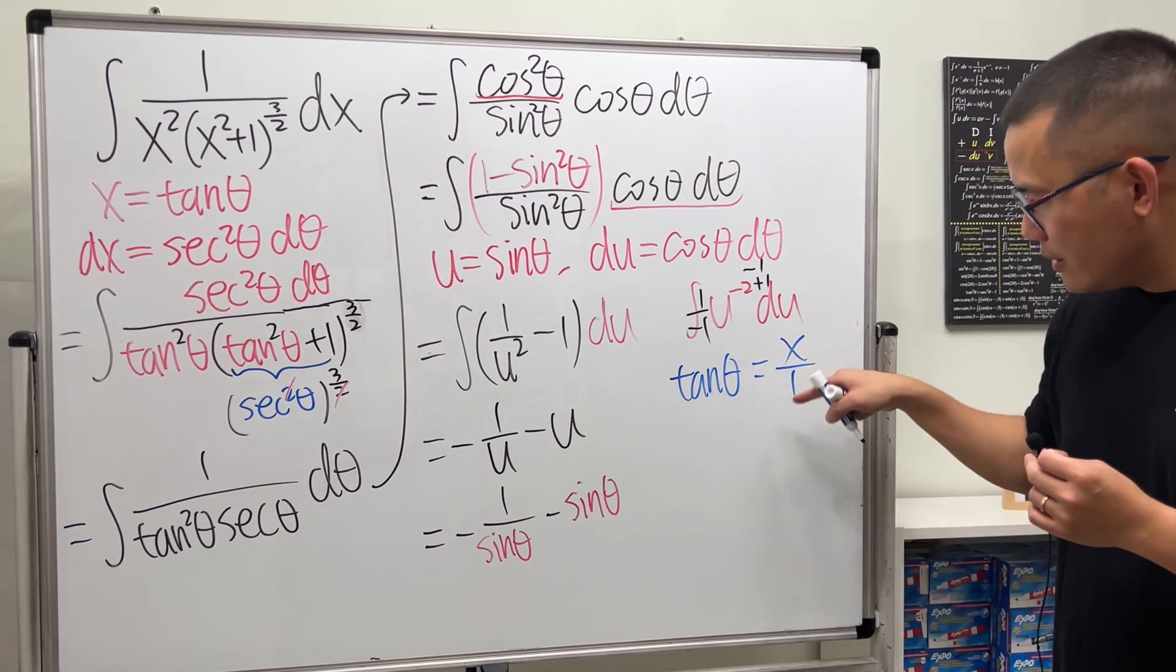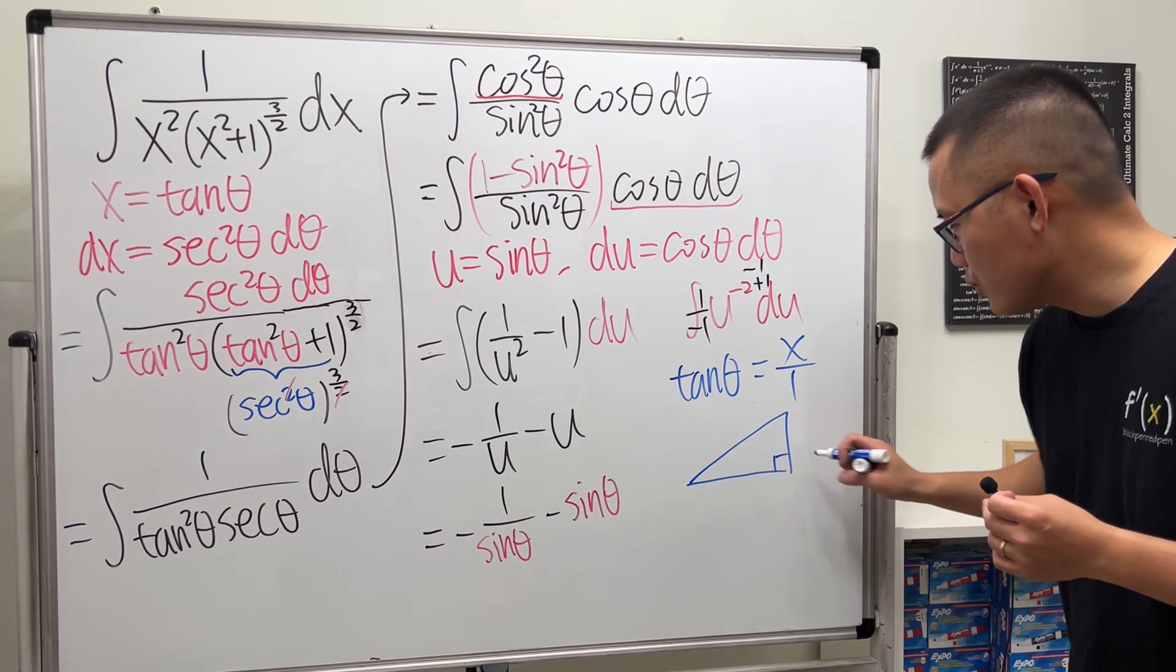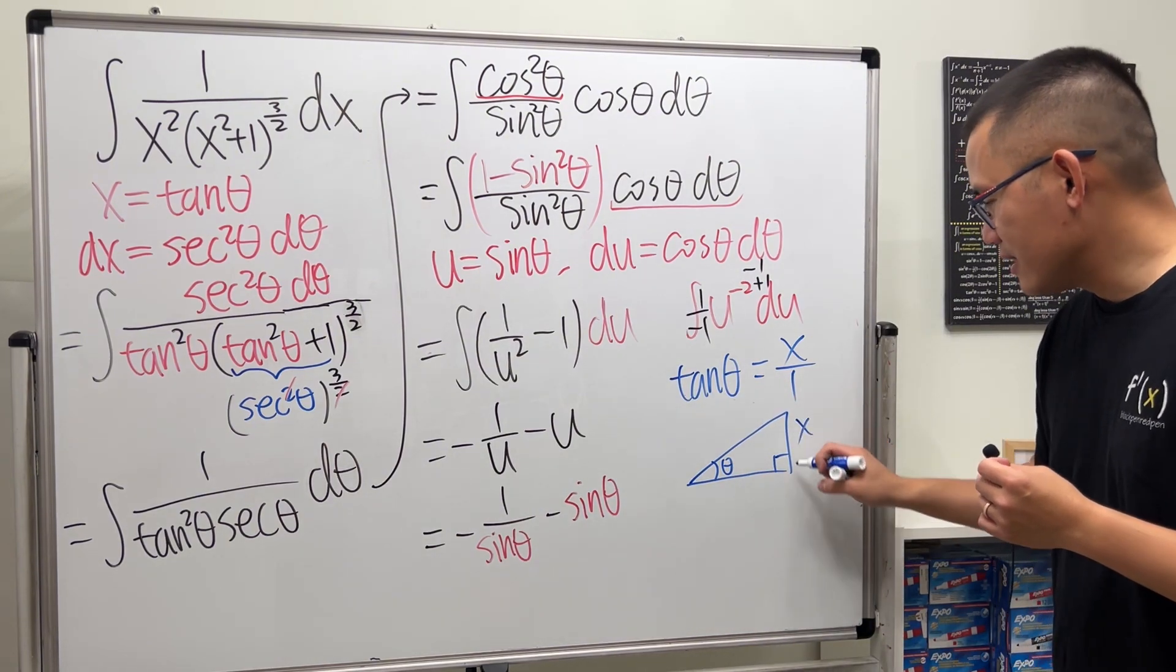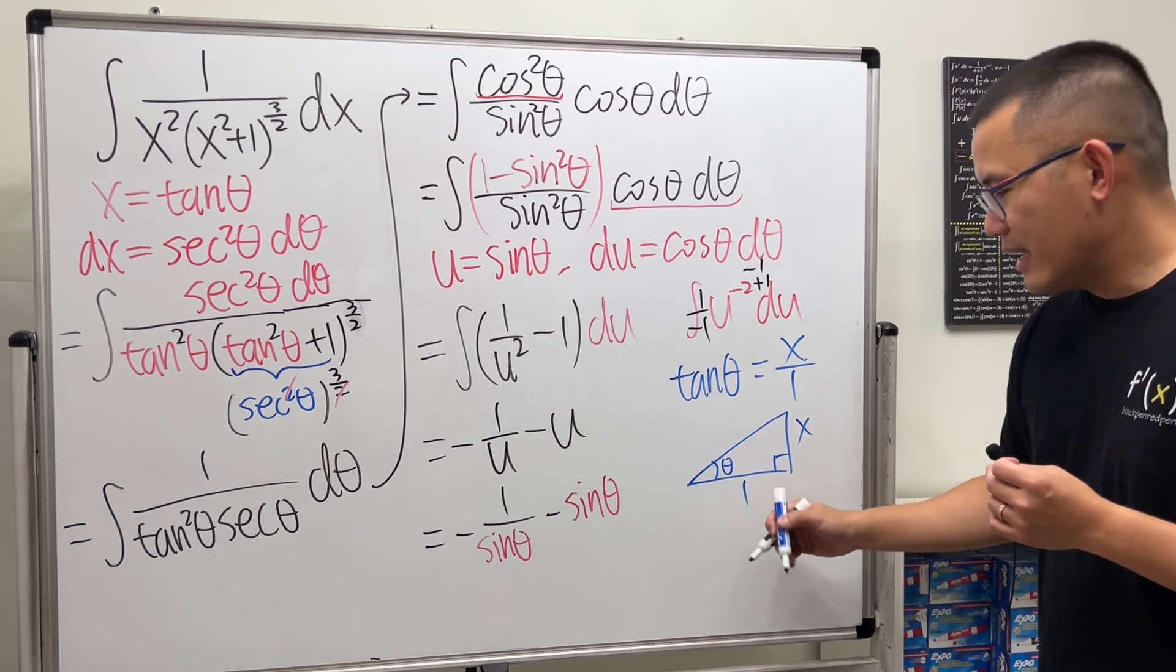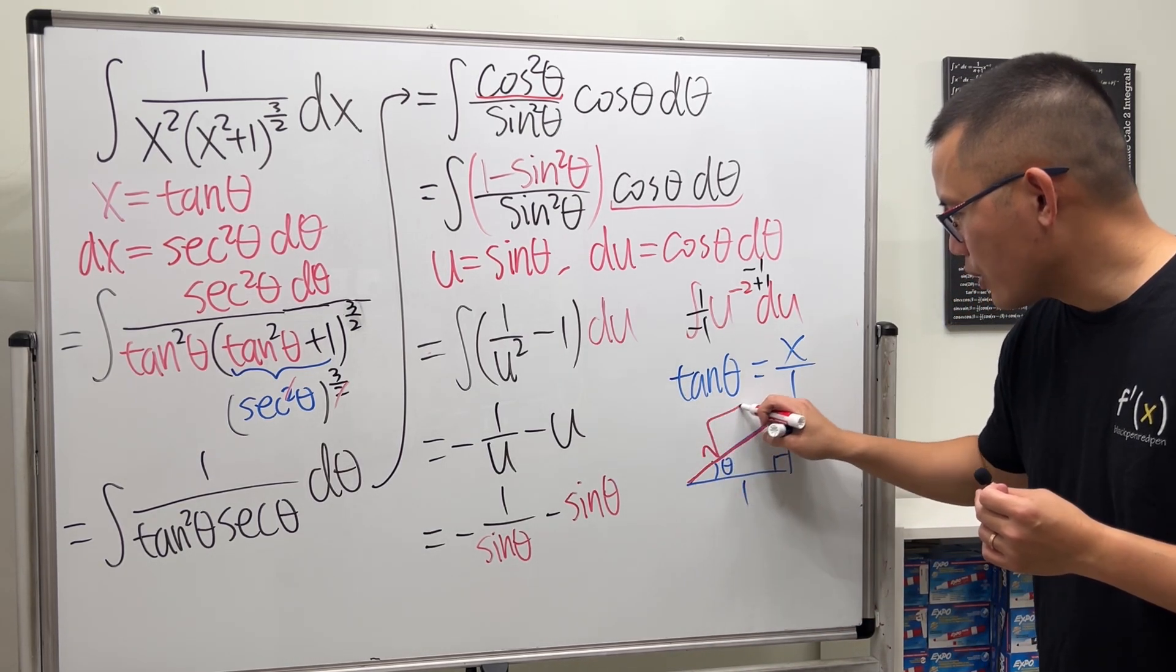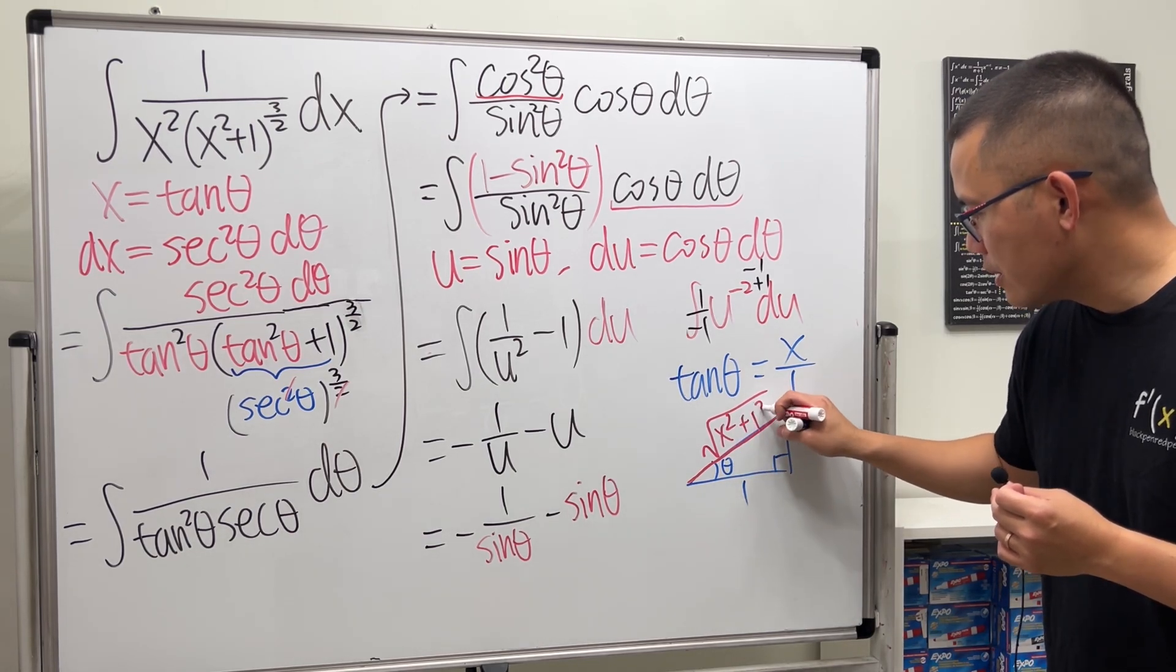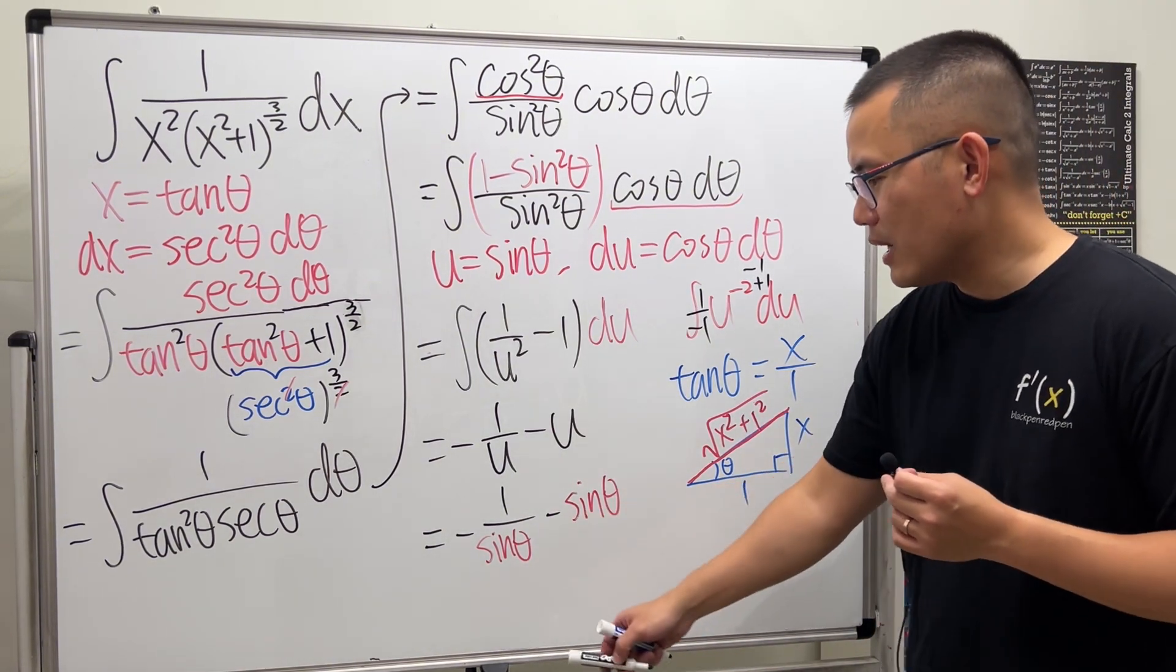Look at this equation: we know tangent theta equals x, and we can put x as x over 1. This way we can draw a right triangle. Put the theta here. Tangent is opposite over adjacent: x over 1. To figure out the hypotenuse, we open the square root: x squared plus 1 squared, which is just x squared plus 1. Now we can look at this picture and figure out sine theta and cosecant theta.